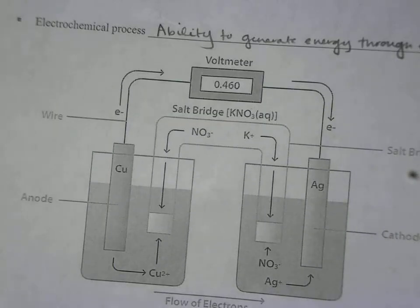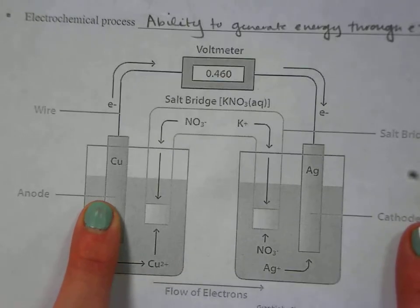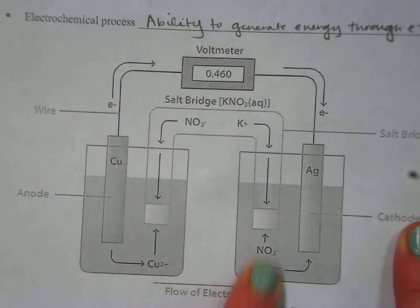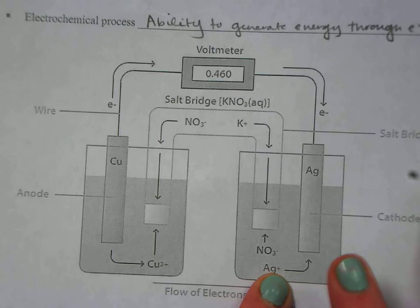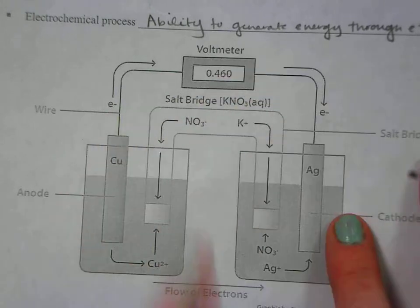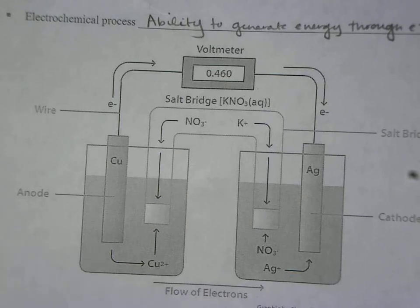It looks kind of complicated, but just remember oxidation at the anode, those electrons flow to the cathode, reduction happens at the cathode, and then this whole process just keeps going where the electrons are flowing back and forth. And that's how I get energy.